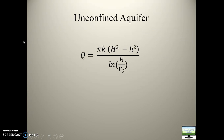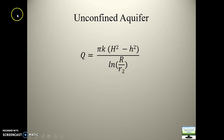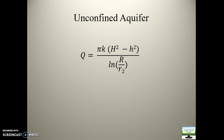Now let's move towards the unconfined aquifer. The theory behind it I have explained in lecture 1.1 — if you have not watched that video, please watch it. The formula will change: R becomes the radius of influence, and the other R becomes the radius of the pumping well. The formula changes from 2πkD(H1 − H2) divided by ln(R1/R2) to πk(h² − hw²) divided by ln(R/rw). With this much knowledge you must be able to remember the formula.